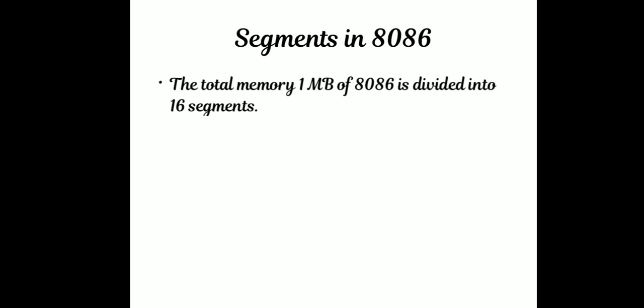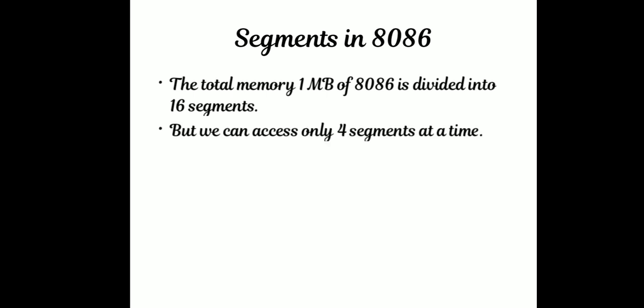The total 1MB memory of the 8086 is divided into 16 segments, but we can access only 4 segments at a time. Each of the 16 segments is 64 kilobytes, so each segment can store 64 kilobytes.